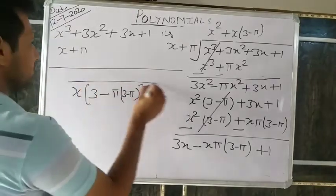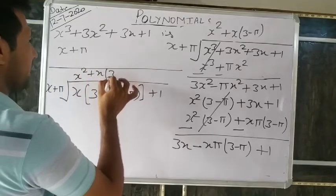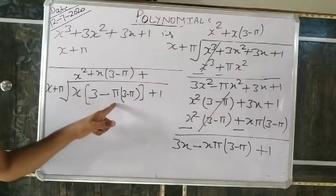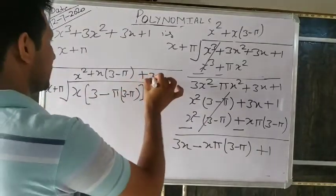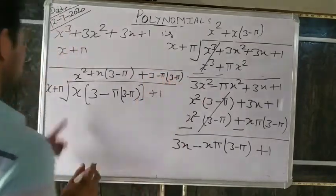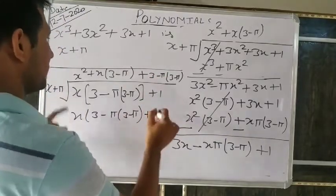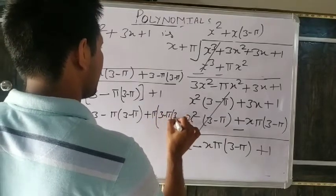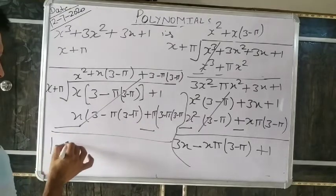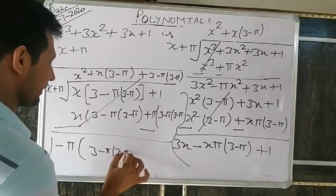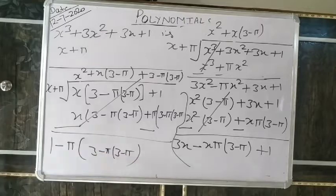Opening the bracket: −π(3−π) = −3π + π². So the remainder is 1 − 3π + π². Therefore: quotient is x² + (3−π)x + π, and remainder is π² − 3π + 1. Negative into negative is positive: so +π². Negative into positive is negative: −3π. Plus 1. So the answer is x²+(3−π)x+π with remainder π²−3π+1.